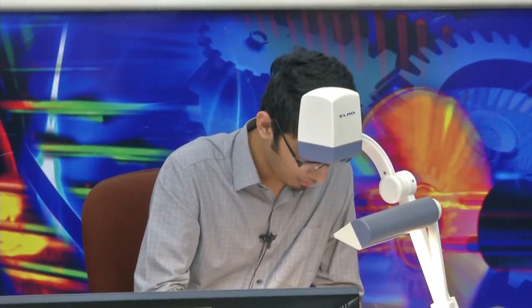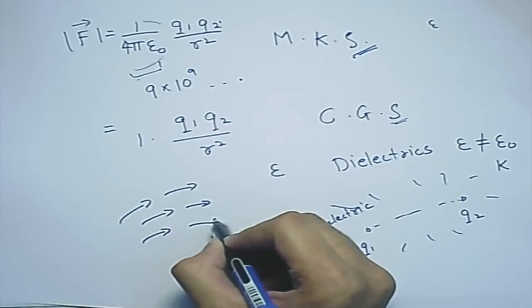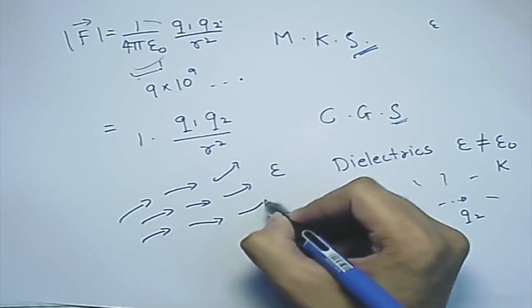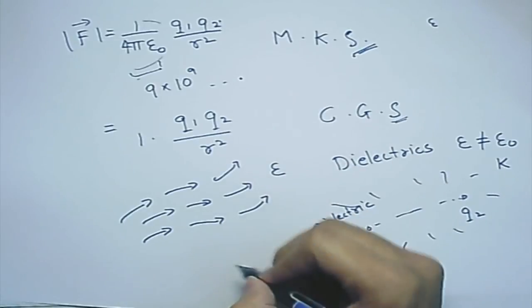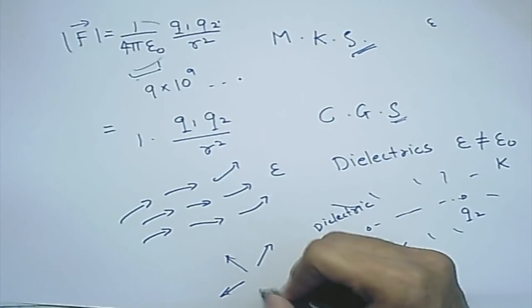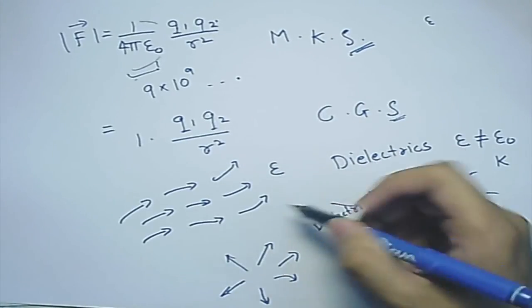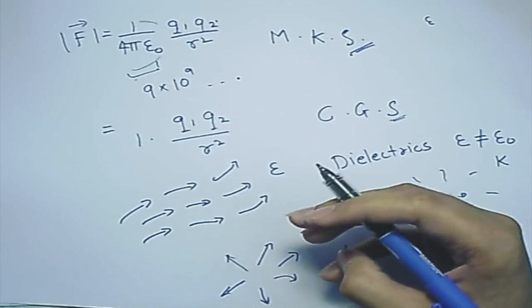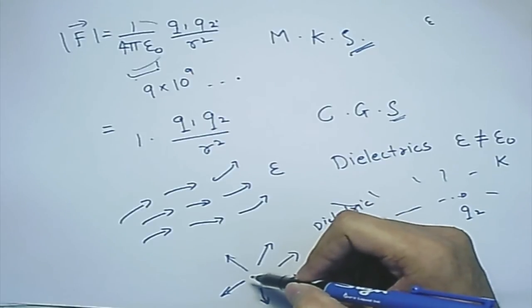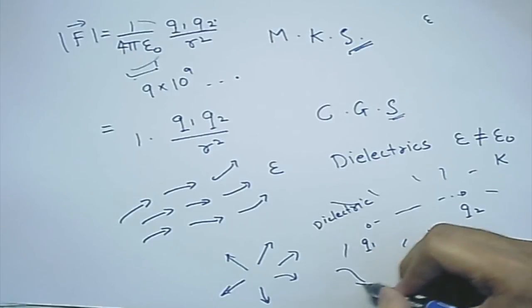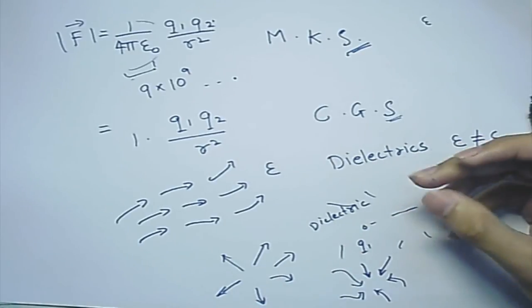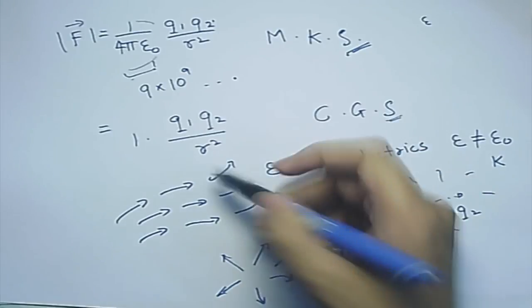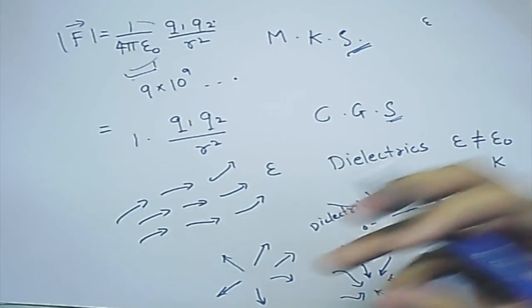Regarding the physical meaning of divergence: if a vector field has no divergence, there are no sources or sinks — flow lines come in and out with no net creation or destruction. If the divergence is nonzero, there is a source or sink at that point. Divergence measures the increase or decrease in flow coming from a given point.